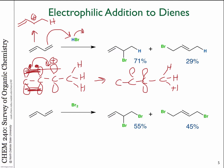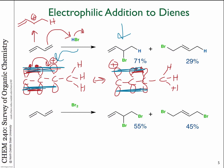These resonance structures show frozen moments where electrons might be on one end or the other. In actuality, the plus charge and electrons are distributed throughout all three p orbitals. That's why bromide could add to carbon 2 to give the 1,2-product, or add to the other end of the system to give the 1,4-product, with the electrons in the middle. Neither Lewis structure exists — they represent extremes, and the actual intermediate is something in between.